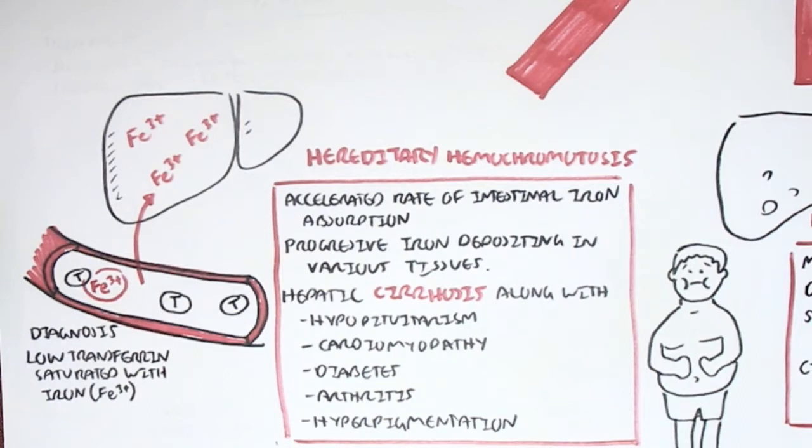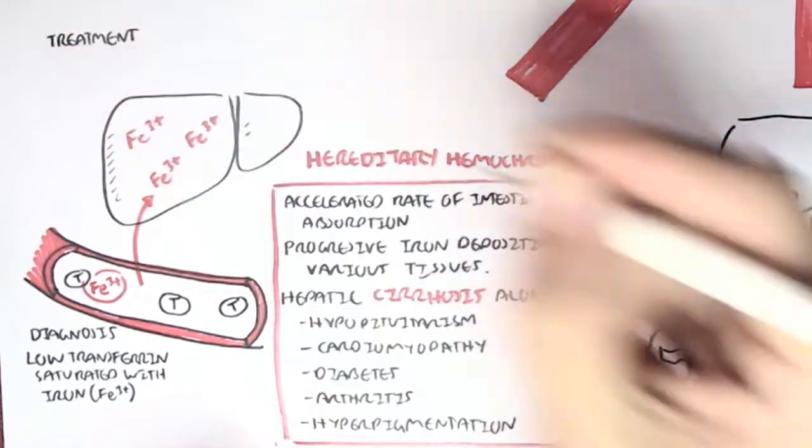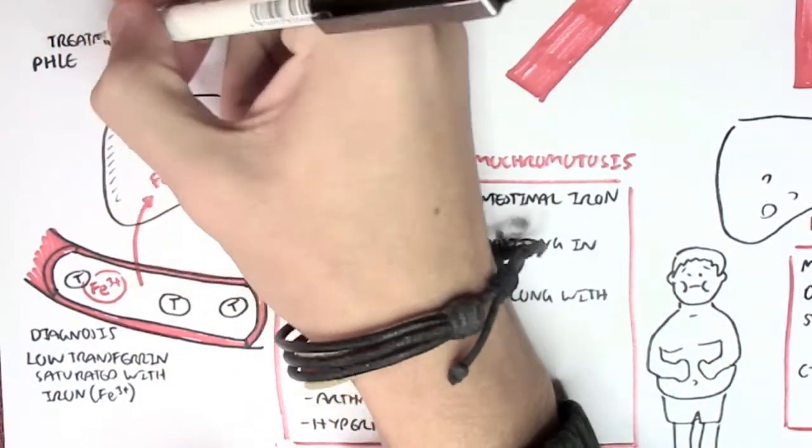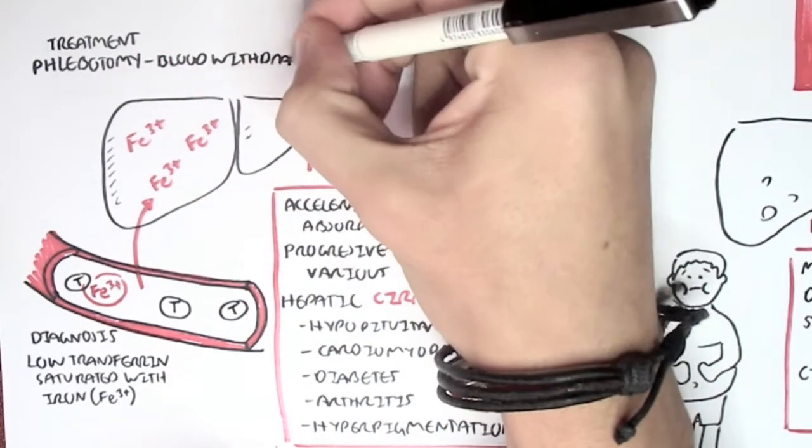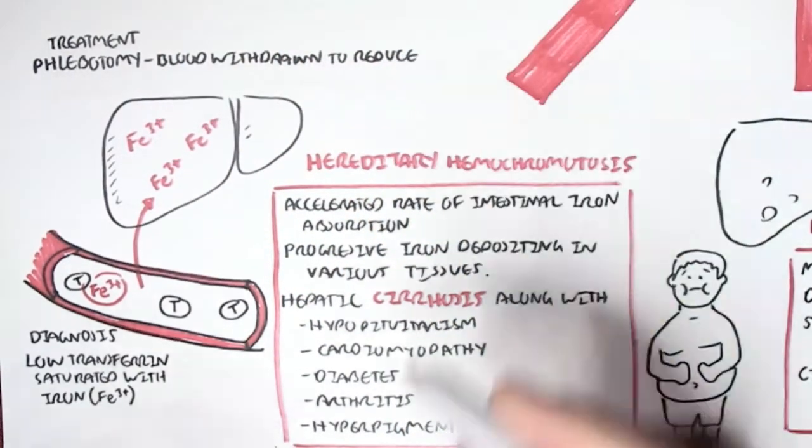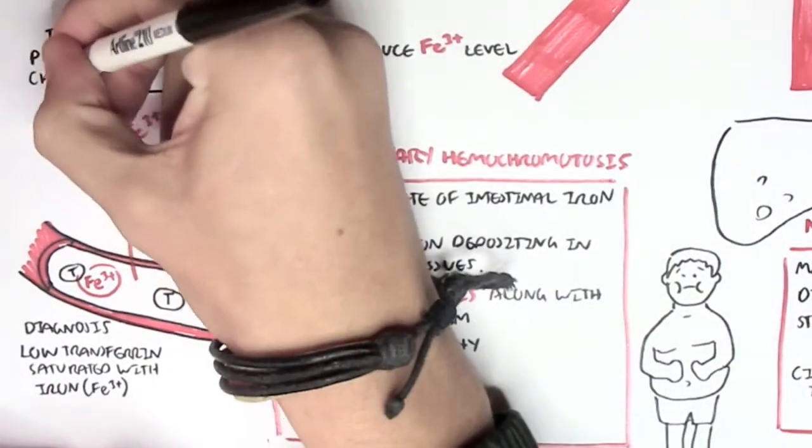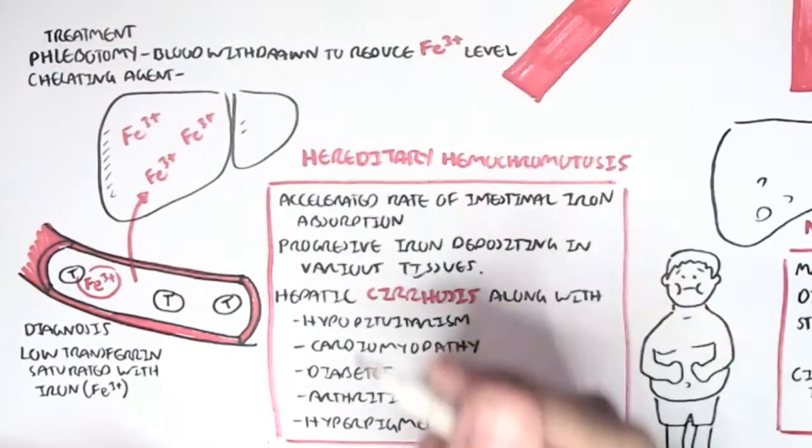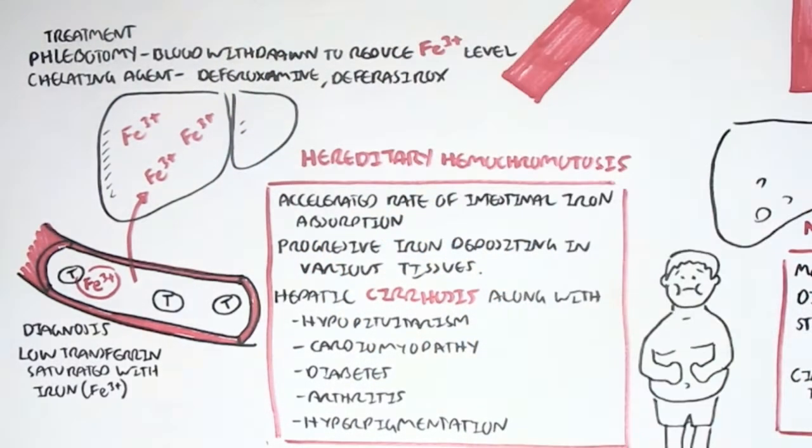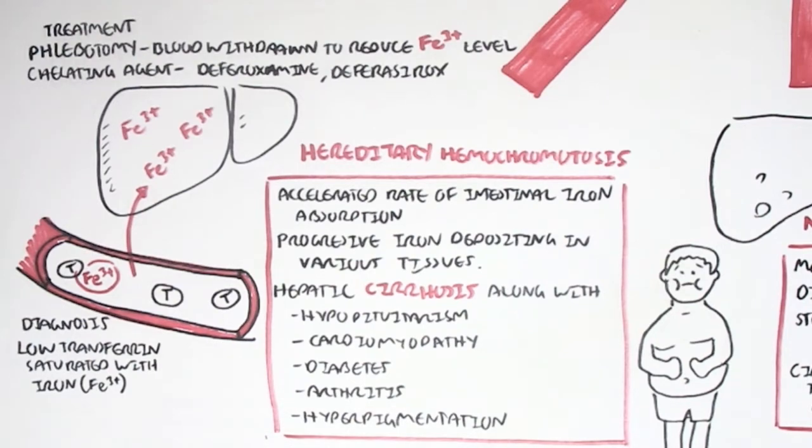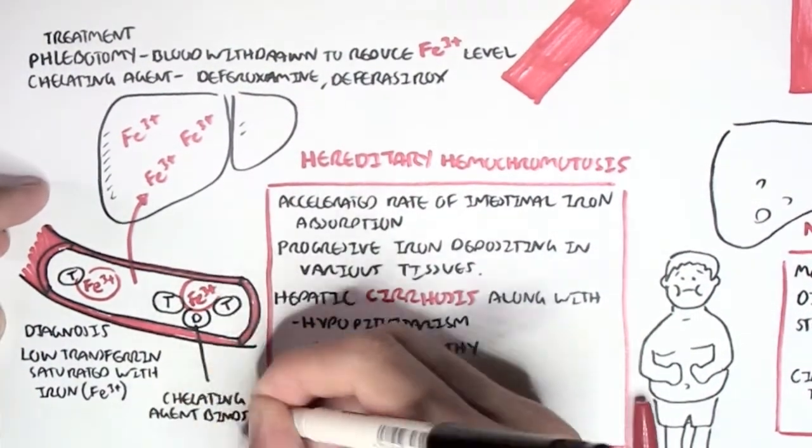To treat hemochromatosis, we can do phlebotomy, where we withdraw blood to reduce the iron levels in the blood and then put new blood in with no iron. Or we can use chelating agents such as deferoxamine. Deferoxamine binds to iron to enhance iron elimination from the body because we have too much iron in the body and need to eliminate it.